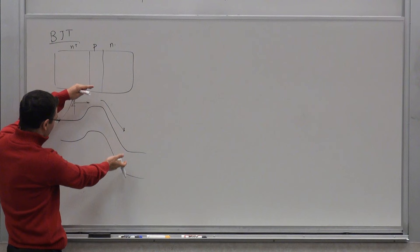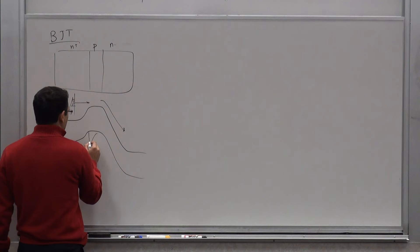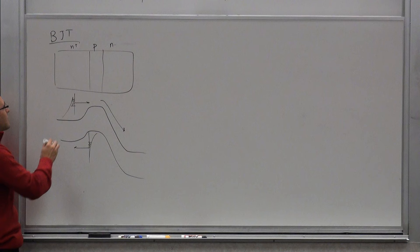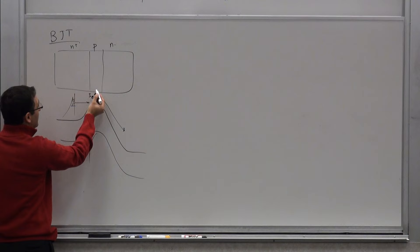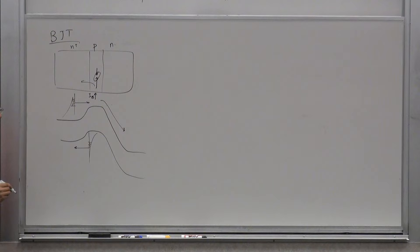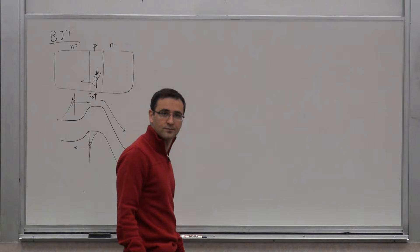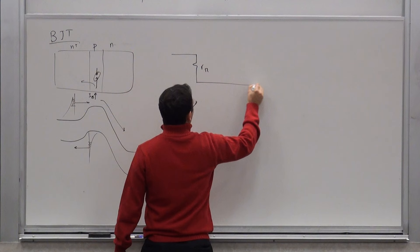You have holes back-injected into the emitter, which aren't useful — that's why you make the emitter N⁺ and the base P, so more electrons go one way than holes. Part of the base current accounts for electrons back-injected into the emitter, and part accounts for electrons recombining with holes in the base. The pi model for the BJT has key elements r_π and the dependent current source g_m·v_π.